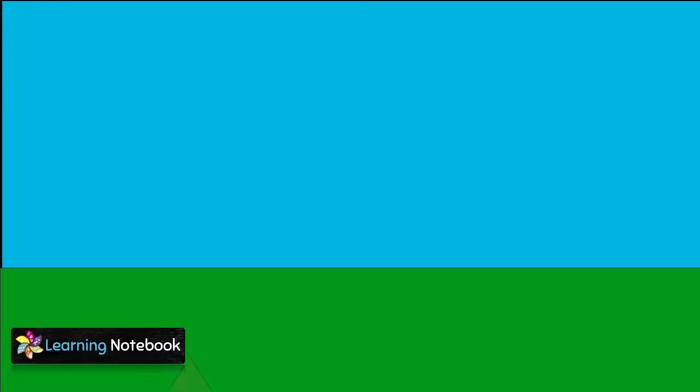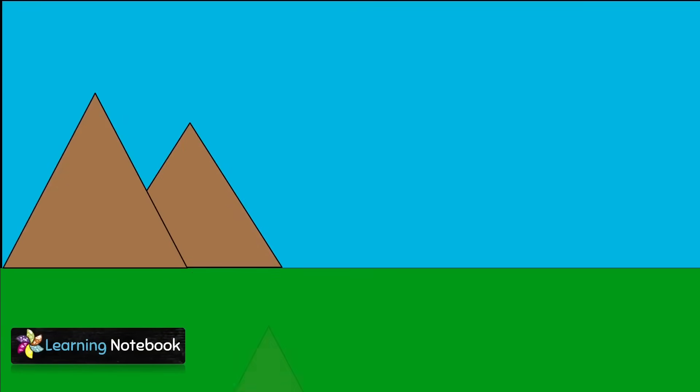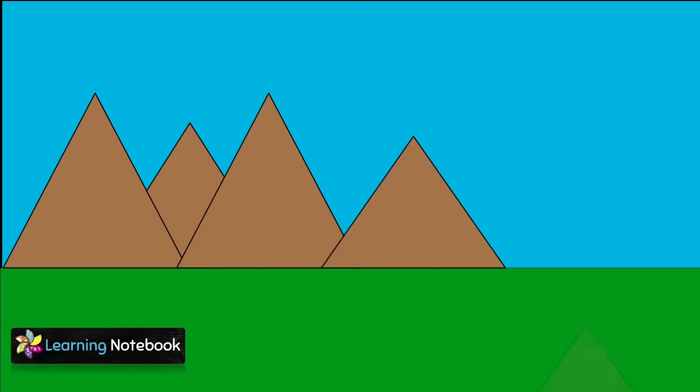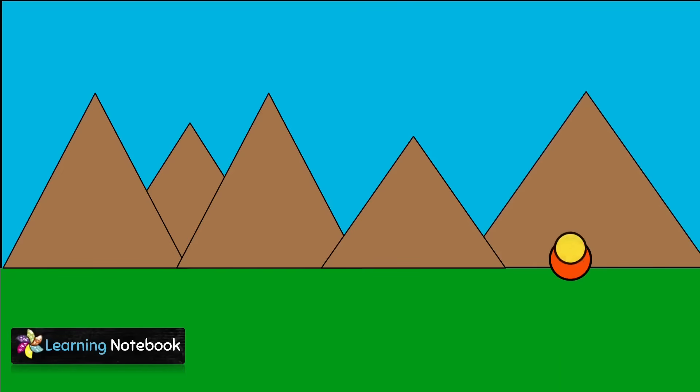Now let's do our third activity in which we will make a flower garden with the help of different shapes. Again, take a blue colored sheet and paste a big green rectangle on it as shown. Now cut and paste some brown colored triangles to form mountains. Then cut out circles to form the center of a flower.